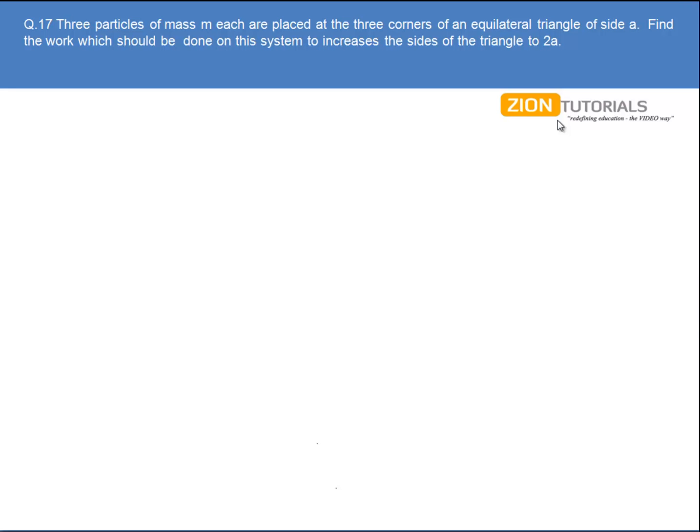Three particles of mass m each are placed at the three corners of an equilateral triangle of side A. Find the work which should be done on this system to increase the size of the triangle to 2A.